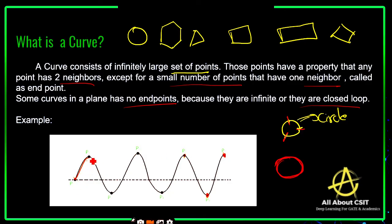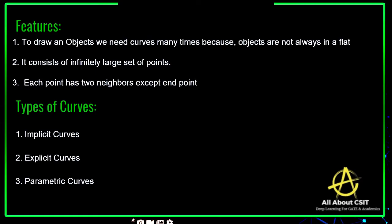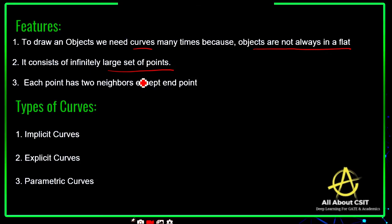Here this is a line segment, and these are curves. With the help of curves, a wave is drawn on the plane. What are the features of curves? To draw an object we need curves many times, because objects are not always flat. Some objects require a curve. A curve consists of an infinitely large set of points, and each point has two neighbors except end points.